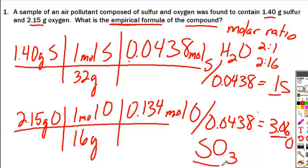So our answer is SO3. And that's how you do these problems and solve for empirical formula. Remember, empirical formula is the lowest whole number ratio of atoms.